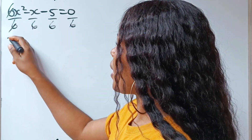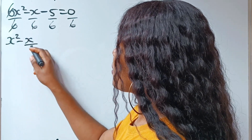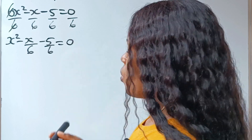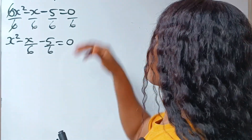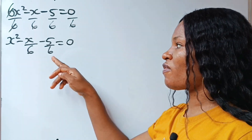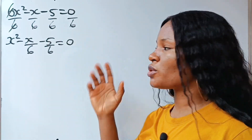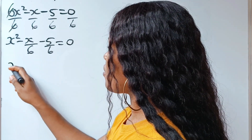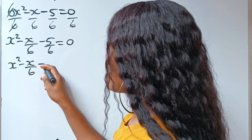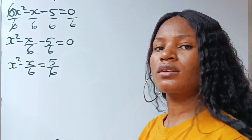When we divide through by 6, we have x squared minus x over 6 minus 5 over 6 is equal to 0. Now at this point, what we need to do is transfer our constant to the other side of the equation. So we have x squared minus x over 6 is equal to 5 over 6.